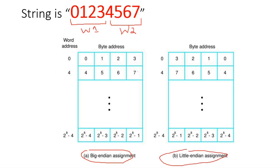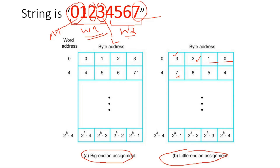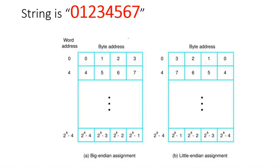In little endian format, we store the least significant byte in the lowest address available. In word 1, '3' is the least significant byte and '0' is the most significant byte. So '3' is stored first, then '2', then '1', and then '0' at address 3. For word 2, '7' is the least significant byte — it gets stored first, then '6', then '5', and finally '4' (the most significant byte) at the maximum address available.